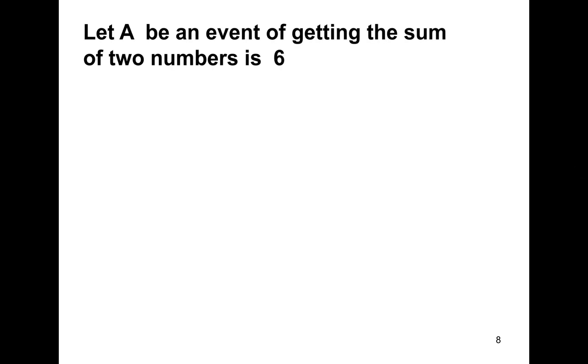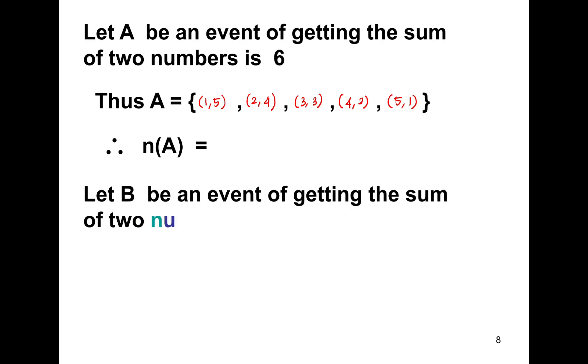Let A be an event of getting the sum of two numbers is equal to 6. Thus, the element of A must be (1,5), (2,4), (3,3), (4,2), (5,1). Therefore, the number of event A is equal to 1, 2, 3, 4, 5. So equal to 5.